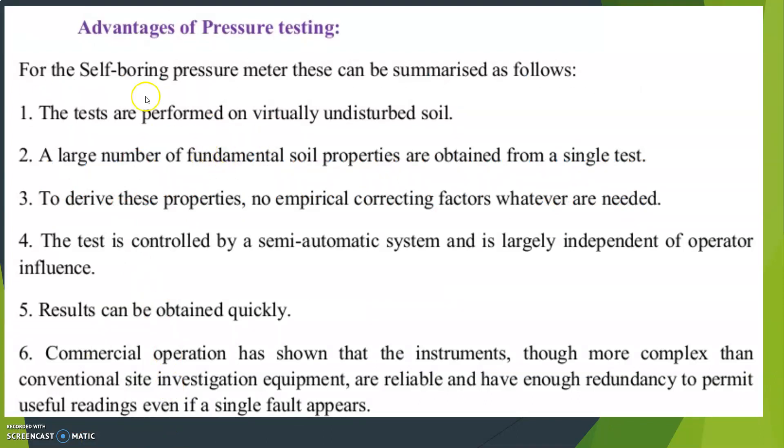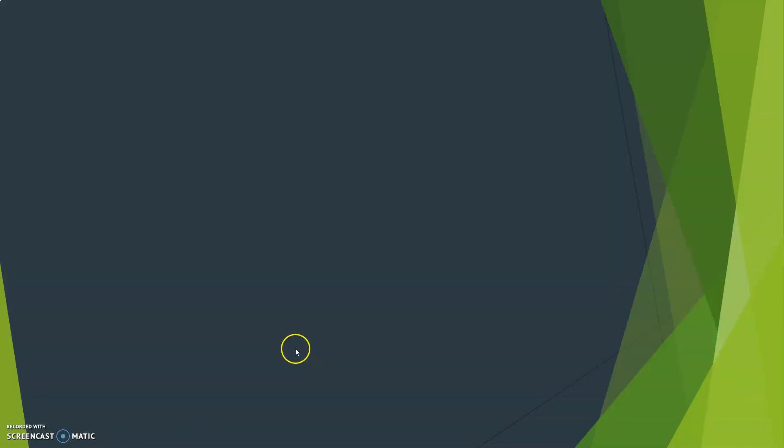There are some advantages of pressure testing. For the self-boring pressure meter, these can be summarized as follows. The tests are performed on virtually undisturbed soil. A large number of fundamental soil properties are obtained from a single test. To derive these properties, no empirical correcting factors whatever are needed. The test is controlled by a semi-automatic system and is largely independent of operator influence. Results can be obtained quickly. Commercial operation has shown that the instruments, though more complex than conventional site investigation equipment, are reliable and have enough redundancy to permit useful readings even if a single fault appears.